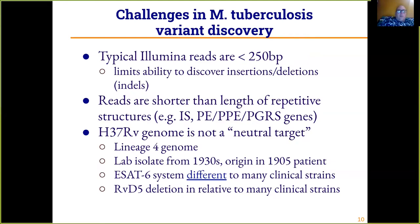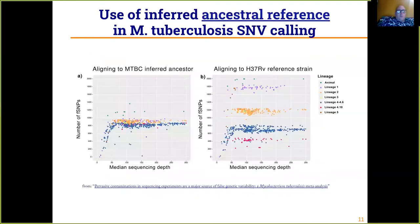There are significant differences in the ESX system in H37Rv compared to many clinical strains, and it also has an RvD5 deletion relative to many clinical strains. So what we see in patients may be quite different from H37Rv, and as a lineage 4 genome, it is not neutral with respect to the diversity of Mycobacterium tuberculosis.